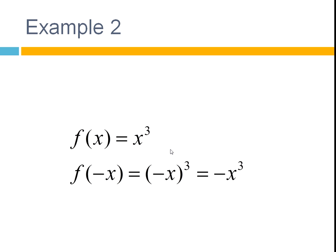Another example, f of x equals x cubed. So we've got an odd power. f of minus x equals, substituting the minus x into the function here, is minus x cubed. When you take a negative number to an odd power, then it stays negative. So you get minus x cubed.